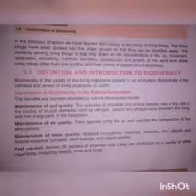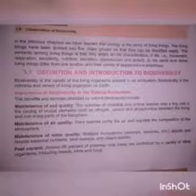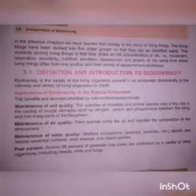Third is pest control. 39% of potential crop pests are controlled by a variety of other organisms including insects, birds, and fungi.